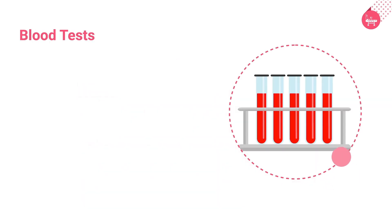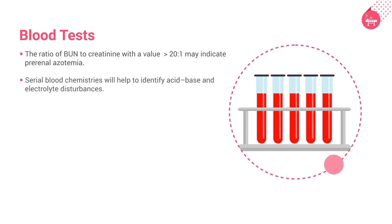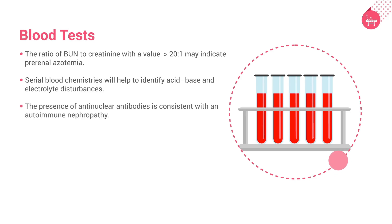Blood tests: Measurement of BUN and creatinine is necessary to identify and monitor AKI. A BUN-to-creatinine ratio greater than 20:1 may indicate pre-renal azotemia. Serial blood chemistries will help identify acid-base and electrolyte disturbances. Anemia may suggest underlying CKD. Eosinophilia frequently accompanies AIN. The presence of antinuclear antibodies is consistent with autoimmune nephropathy, such as lupus nephritis or scleroderma, both of which may cause AKI.